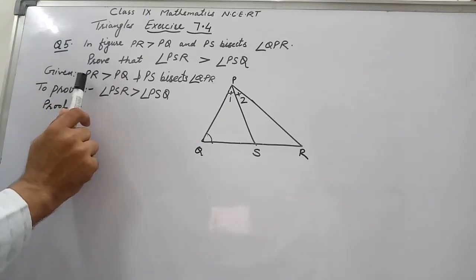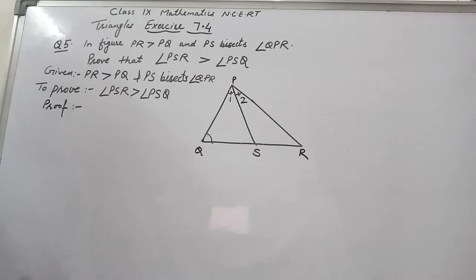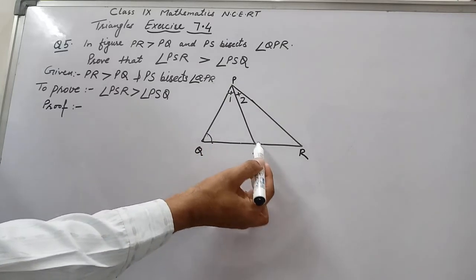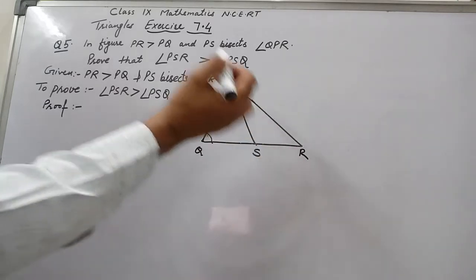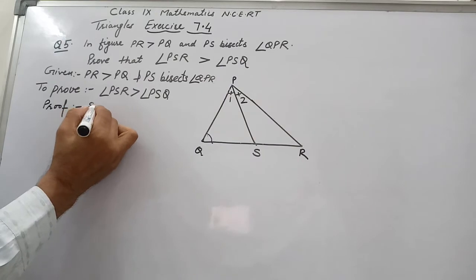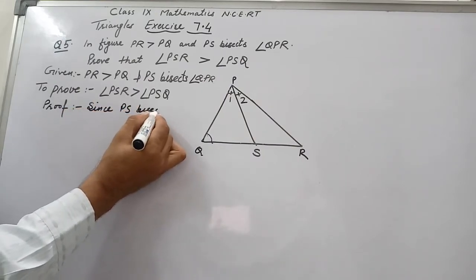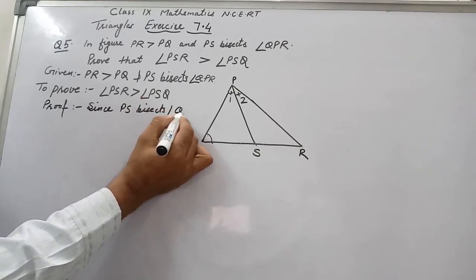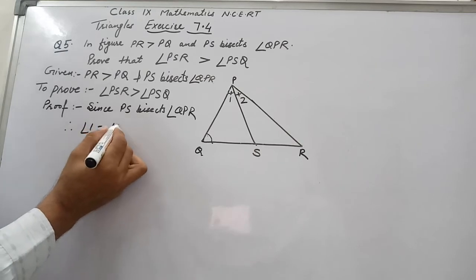First we will write the Given and then To Prove. Since PS bisects angle QPR, therefore angle 1 is equal to angle 2.